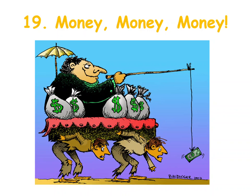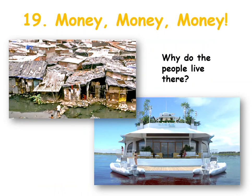Rich and poor. So who is rich, who is poor? These people are poor and these people are rich. So why do the people live there? So these are slums. The people live here because in their country maybe it's a poor country.